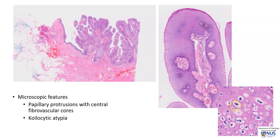there is a change known as koilocytic atypia. The squamous cells show enlargement, hyperchromasia of the nuclei, and irregular nuclear membranes. These nuclei are surrounded by a clear halo, which is the classical appearance of koilocytes, or cells with viral cytopathic change associated with HPV infection.